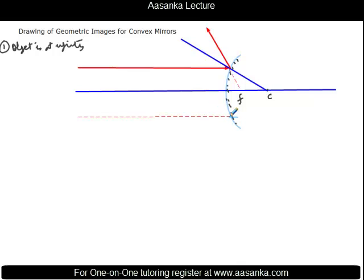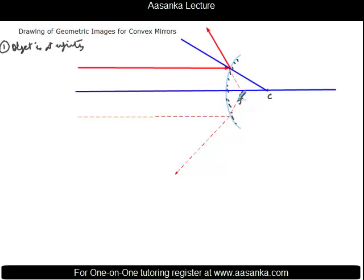Any ray parallel to the principal axis, after reflection, will appear to come from the focus. The image is virtual because it forms at the back of the mirror. It is erect and highly diminished because very little energy is received. The image is formed at the principal focus behind the convex mirror.